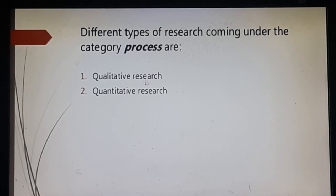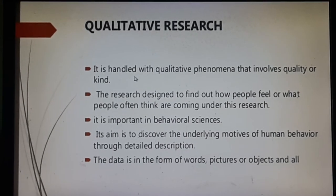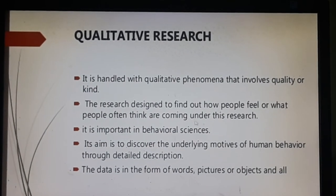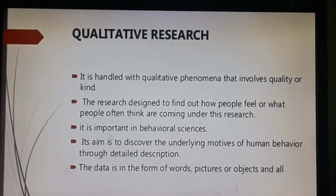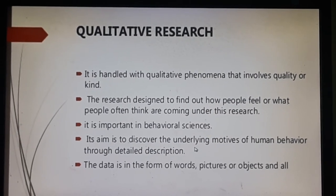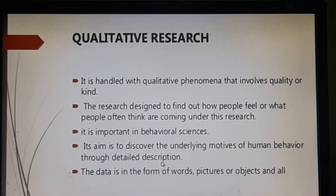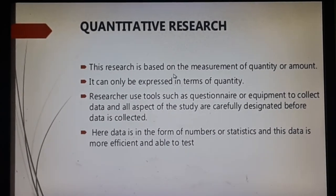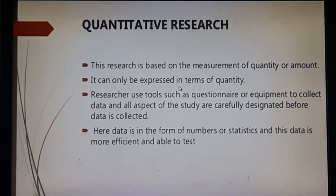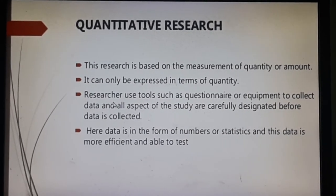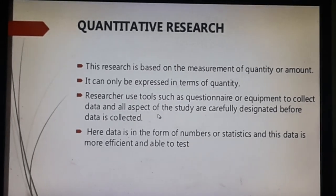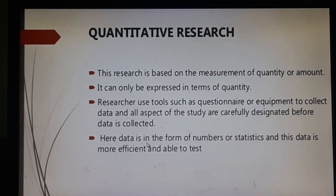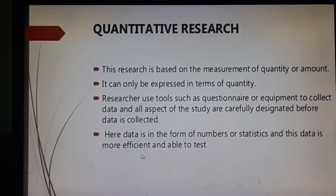From a process point of view, research can be categorized into qualitative research and quantitative research. Qualitative research handles qualitative phenomena involving quality or kind — research designed to find out how people feel or what people think. It is important in behavioral sciences and aims to discover the underlying motives of human behavior. The data is in the form of words, pictures, or objects. Quantitative research is based on the measurement of quantity or amount, expressed in terms of numbers or statistics, using tools such as questionnaires or equipment to collect carefully designated data.